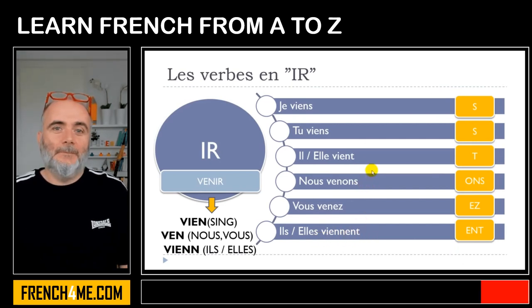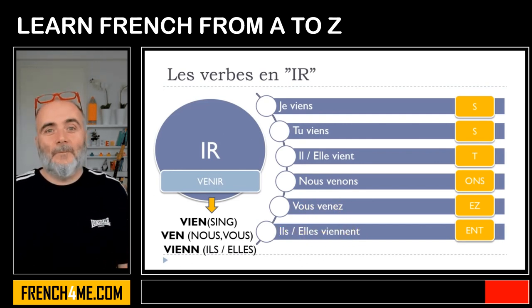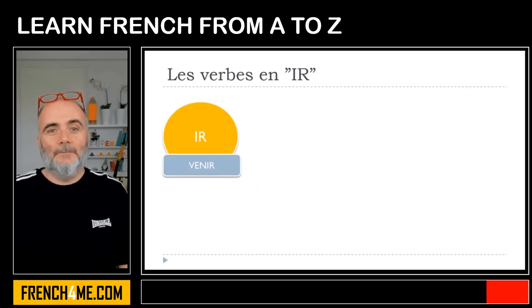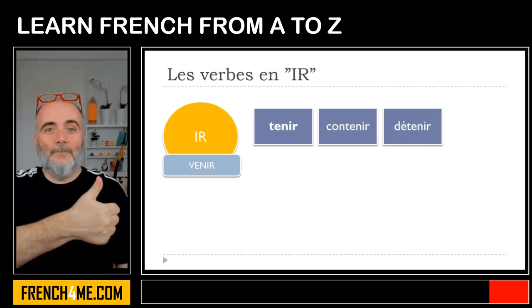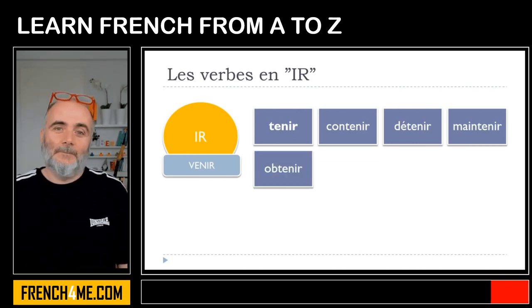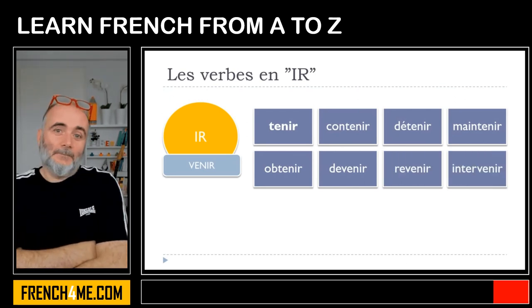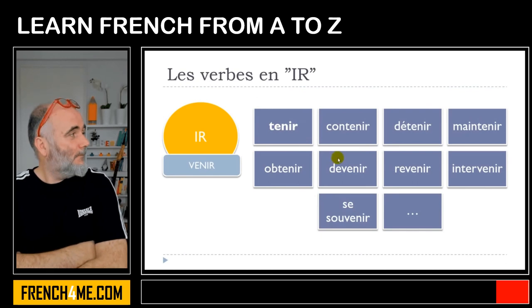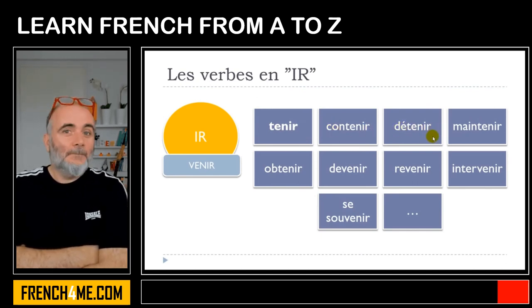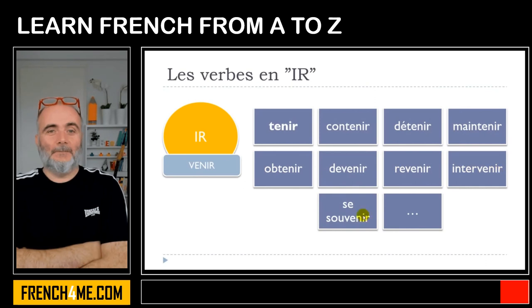Just one more time to make it clear: je viens, tu viens, il vient, elle vient, nous venons, vous venez, ils viennent, elles viennent. Now let's see the verbs that will actually be conjugated like venir: tenir, contenir, détenir, maintenir, obtenir, devenir, revenir, intervenir, se souvenir, and a few others.